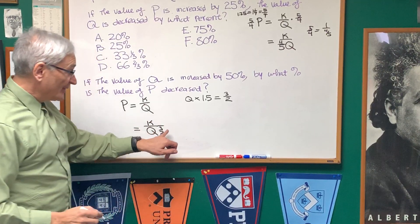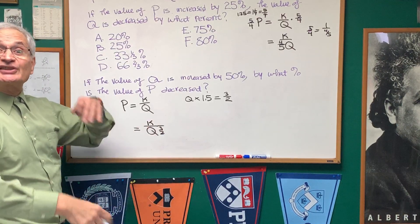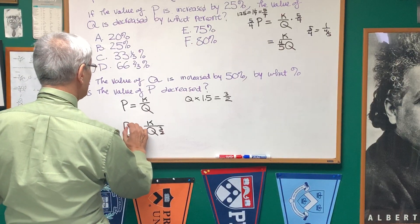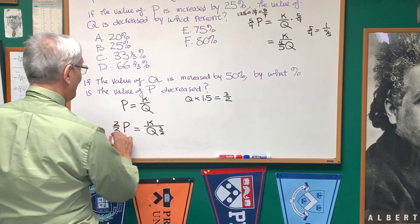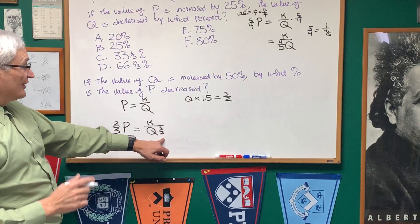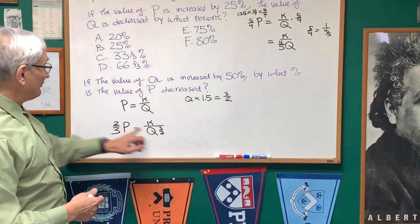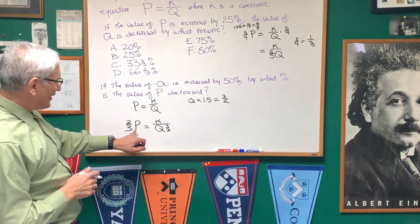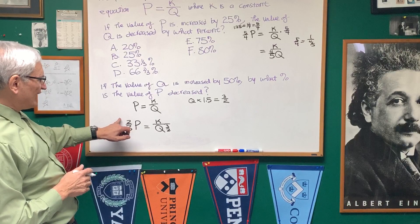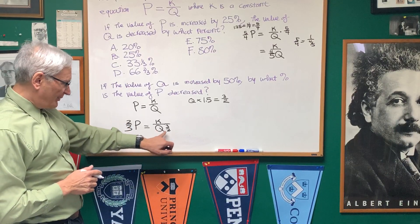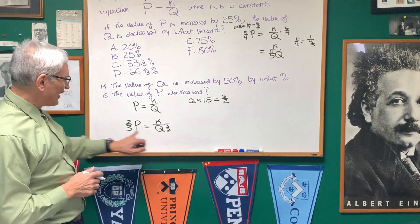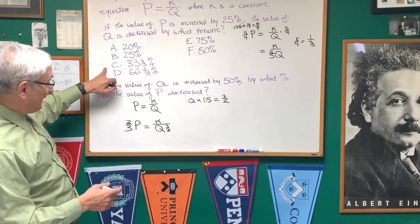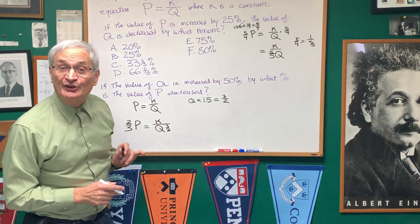But remember, multiplying by 3 halves in the denominator is like multiplying by 2 thirds in the numerator. So, actually, that corresponds to multiplying each side of the equation by 2 thirds, because of the position of Q in the denominator. That means P, we're only taking 2 thirds of P. By increasing Q by 50%, we actually decrease P by 1 third, or we decrease P by 33 and a third percent.